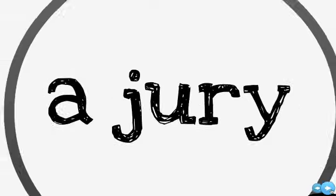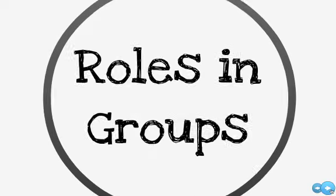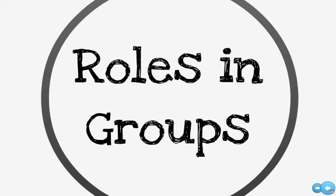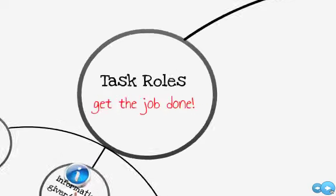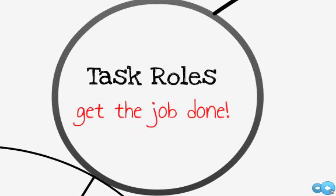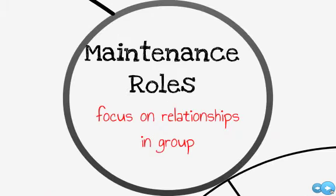Within group communication, there are various roles that individuals tend to play. We each have different personalities with varying levels of assertiveness and responsiveness, so we don't all behave the same way when we're in a group. There are two main categories of roles that often surface in group communication. The first are task roles, and the second are maintenance roles. Task roles seek to get the job done, while maintenance roles focus on the emotional or relational tone in the group.